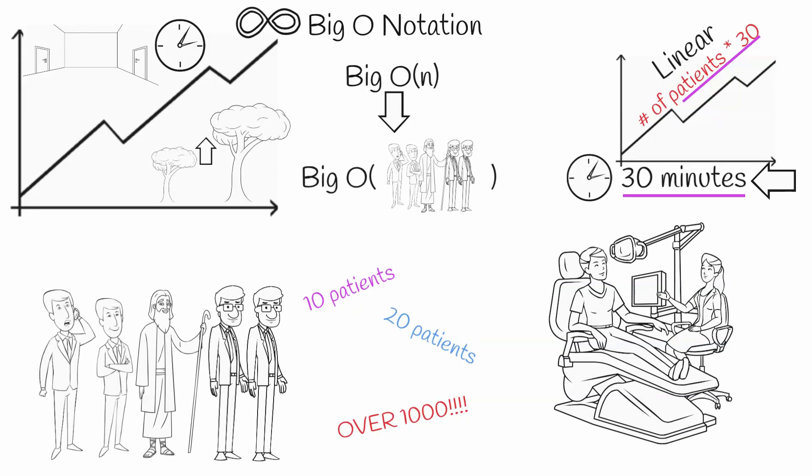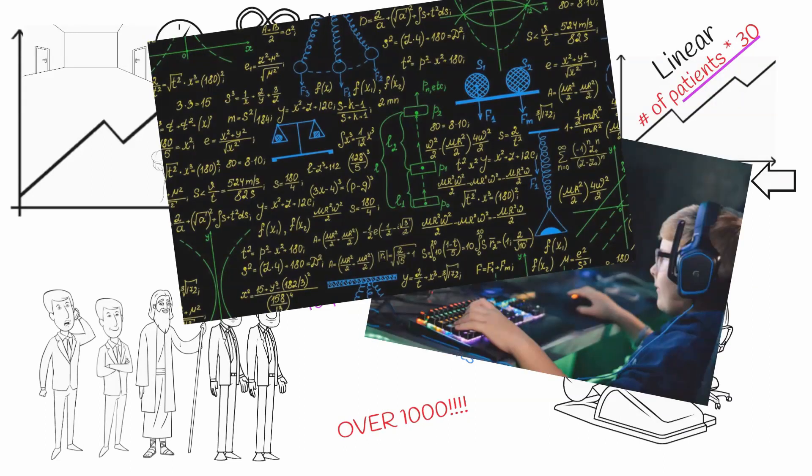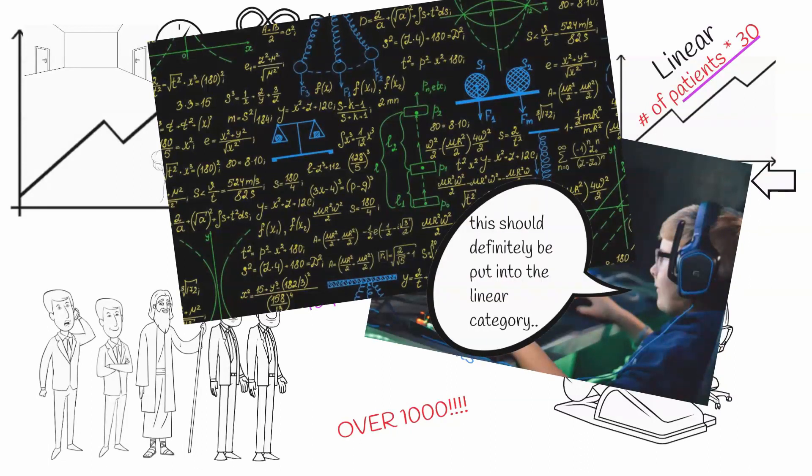We use this same technique to determine the efficiency of algorithms. We can get a general idea of how a function's time efficiency scales by categorizing a given function's efficiency the same way that we categorized the dentist's efficiency. Let's create an easily comprehensible function that scales similarly to the dentist's.